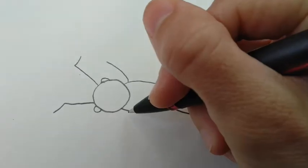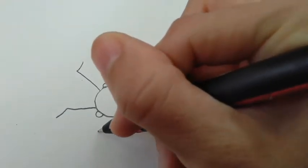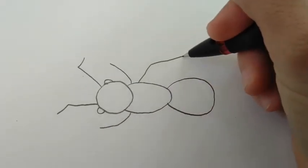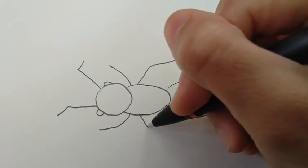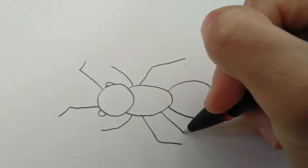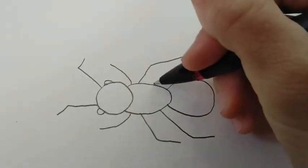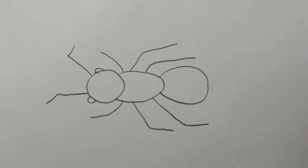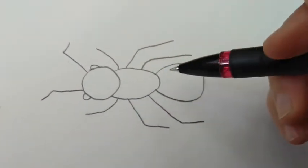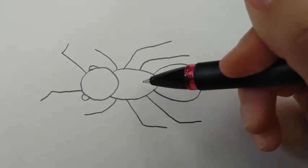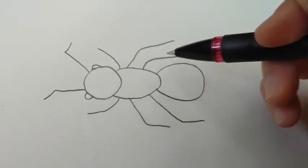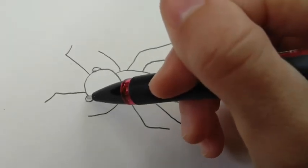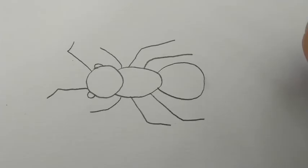The first set of legs on an insect usually point forward like that, so the front two legs point forward. And then the other set of legs usually point back. So if you just combine a few simple shapes — a circle for the head, an oval for the thorax and the abdomen, and then just some lines for the legs and antenna, and a couple of small circles for the eyes — then you can draw an insect.